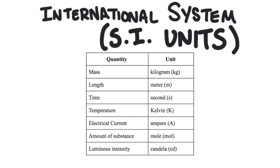There are seven SI units. For mass, we use the kilogram. Length, we use the meter. Time is the second. Temperature is the Kelvin. Electrical current is the ampere. Amount of substance is the mole. And luminous intensity is the candela. The SI units are not always the most convenient measurement.